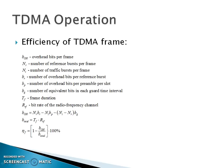Next is the TDMA operation. Efficiency of a TDMA frame is equal to 1 minus BOH upon B_total, multiplied by 100%. BOH stands for overhead bits per frame upon B_total. B_total is TF into RF, where TF stands for frame duration and RF stands for bitrate of the radio frequency channel.